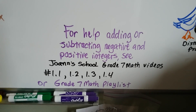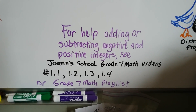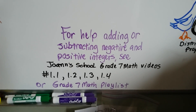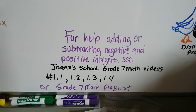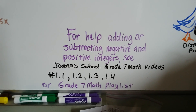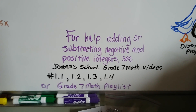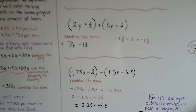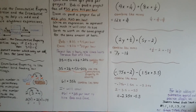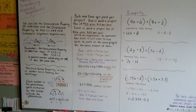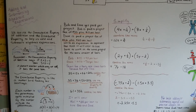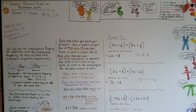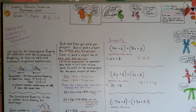If this is really confusing, you can get extra help for adding and subtracting negative and positive integers by going to my Joann's School Grade 7 math videos at the beginning of the playlist — 1.1, 1.2, 1.3, and 1.4 — and those will cover this. You can go back for a quick review if you're confused. We're going to talk about how the distributive property takes place in all of this in our next video, number 6.1b. See you there — bye!